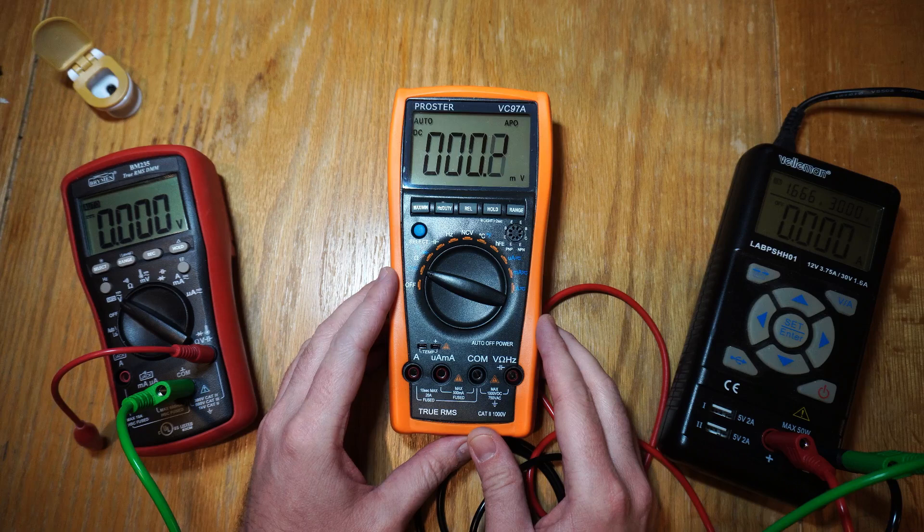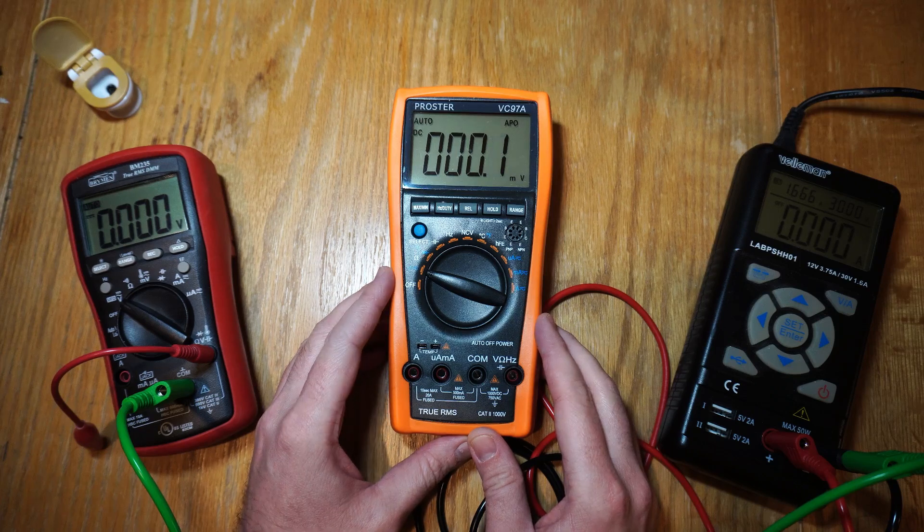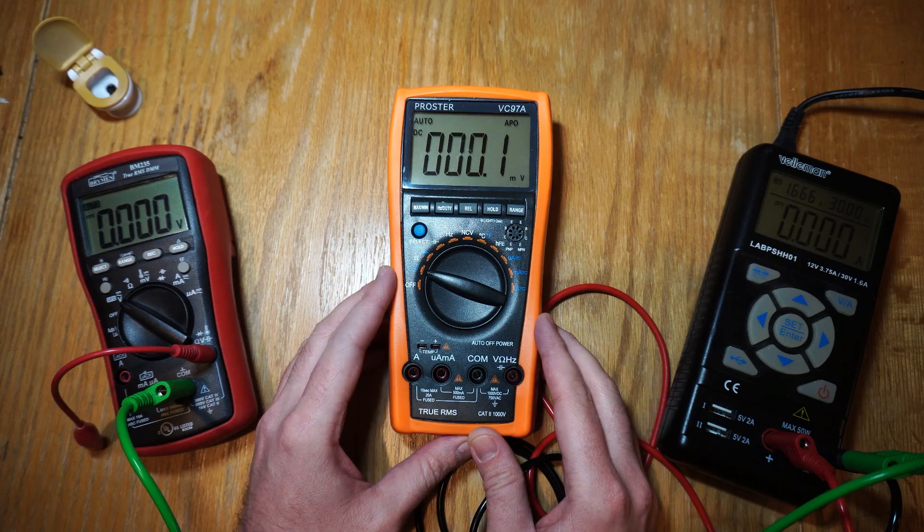Now this is a ProStar VC97A. It's pretty cheap. It measures voltage, current, resistance, frequency, capacitance, and temperature.